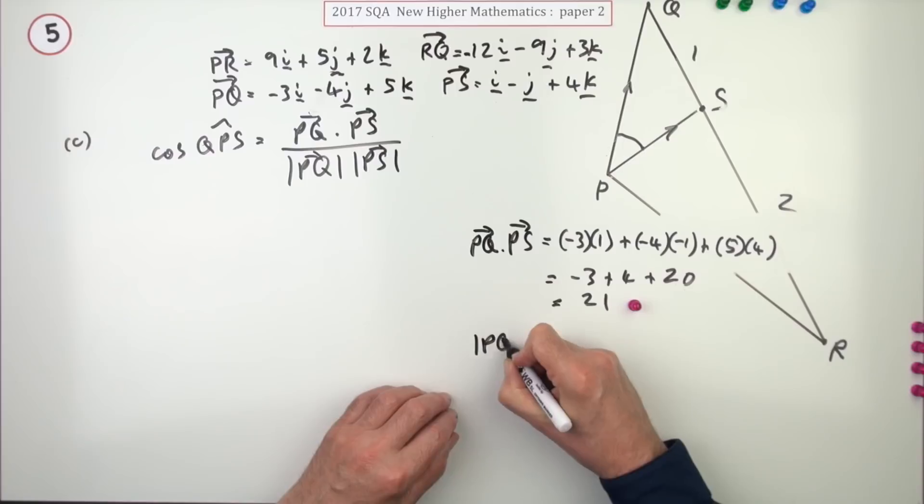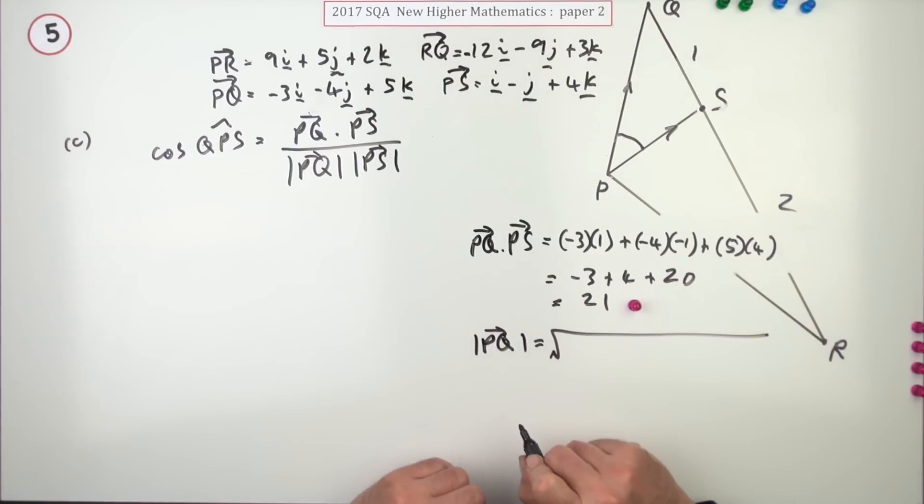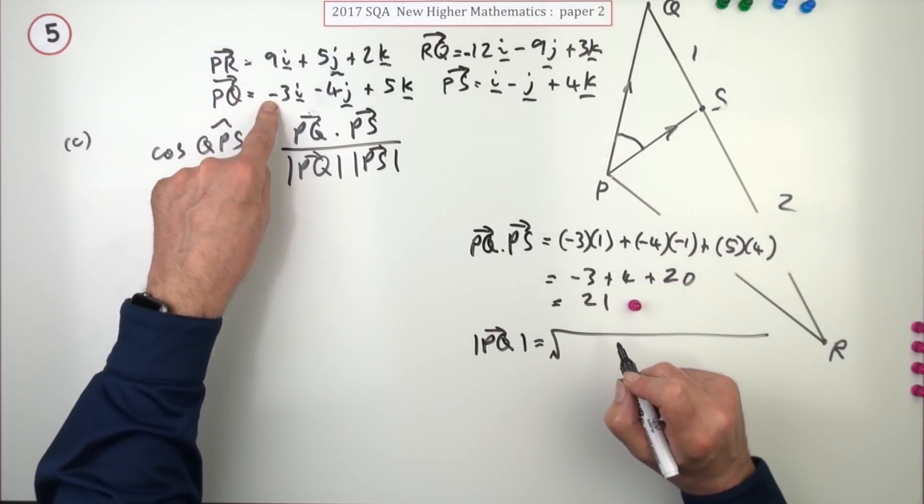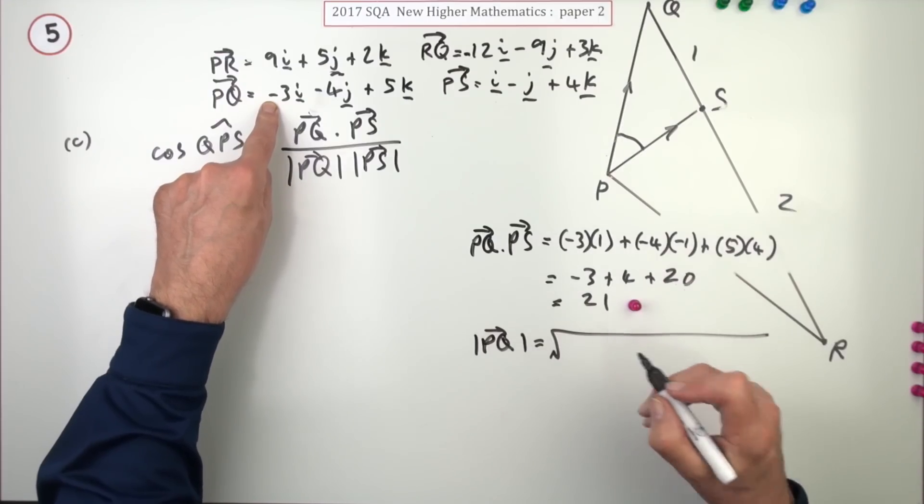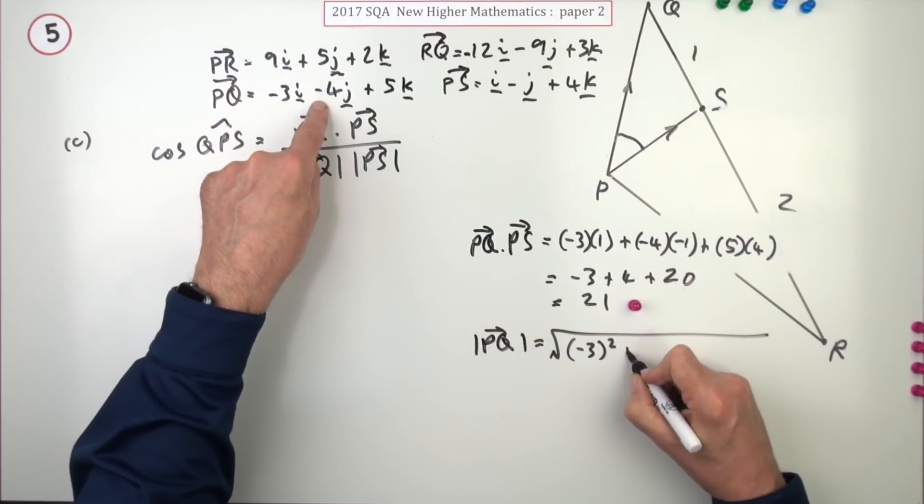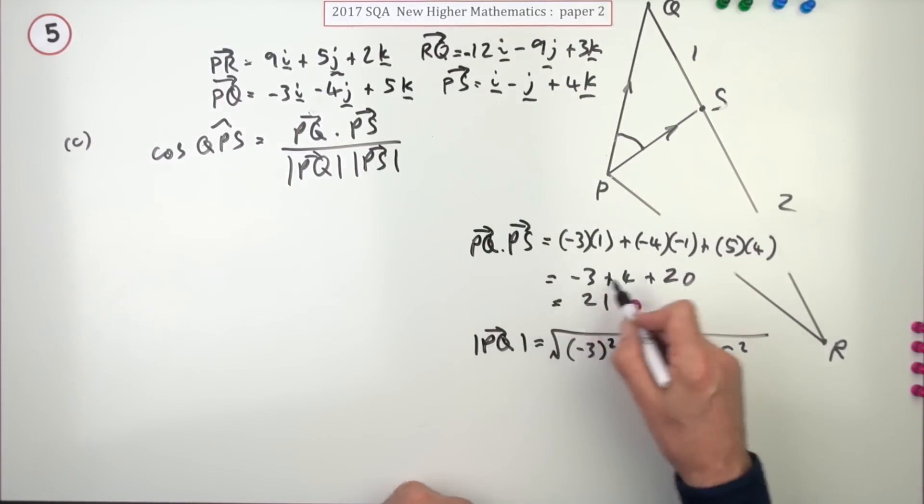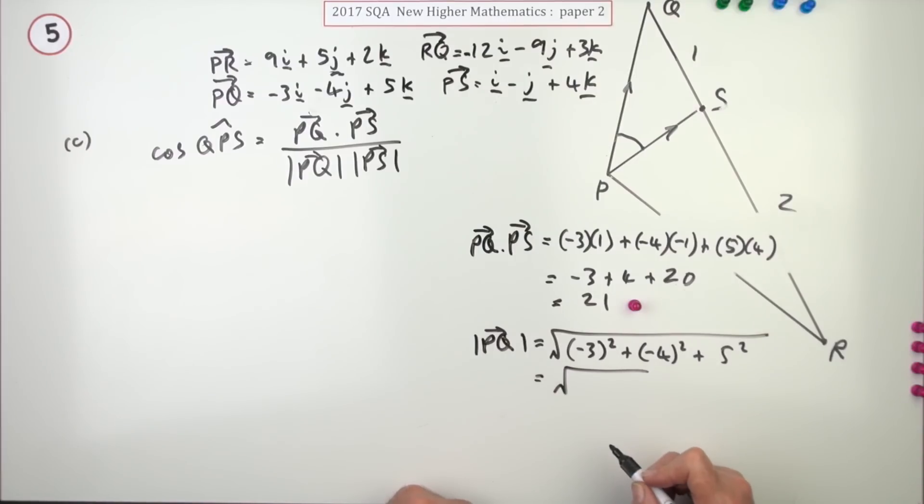Now, the magnitudes. Magnitude of PQ. The square root of the component squared. Might as well be rigorous. I know negative three squared is the same as three, and I'd probably just do three squared. I think I'll just put down negative three squared, negative four squared, five squared. Now, I don't suppose I need to go through all the bits and pieces like that. That's going to be the square root of, that's 9 and 16 is 25 and 25 is the square root of 50. Now, that does simplify. But as well, just leaving like that, because it's just going to be put into your calculator. Doing that gets a mark. That is 25 times two. It is five root two, but I would just leave it like that.